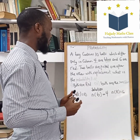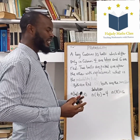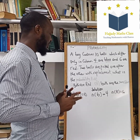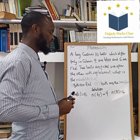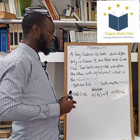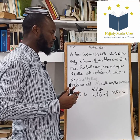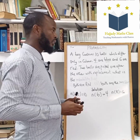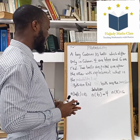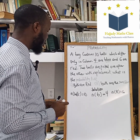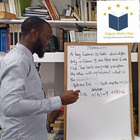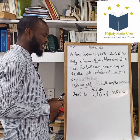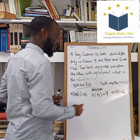Two balls are picked one after the other with replacements. What is the probability that both are red? Also, what is the probability that both are the same color? Now let's look at this situation. We want to consider both experiments — the events to be red and also both are of the same color.